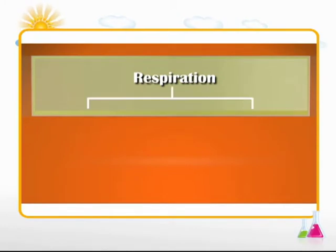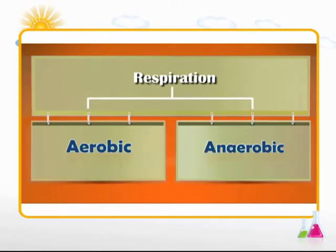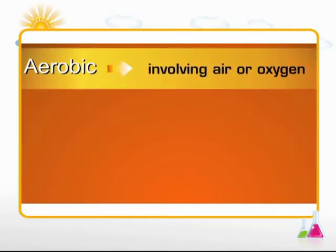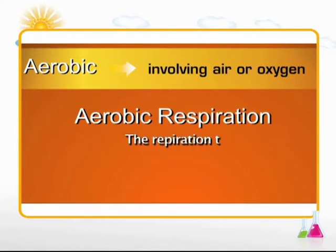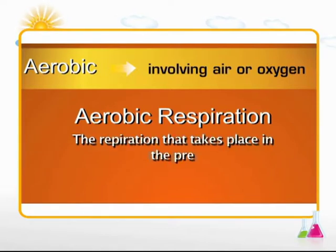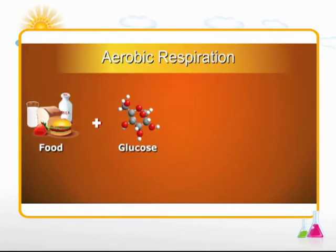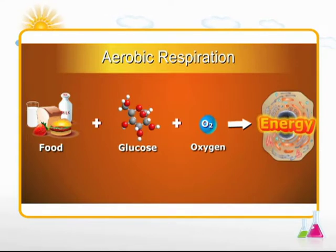There are two basic types of cellular respiration, aerobic and anaerobic. Let's first take up aerobic respiration. The word aerobic stands for involving air or oxygen. You can now easily guess what aerobic respiration means. It is the respiration that takes place in the presence of oxygen. In aerobic respiration, food and glucose combines with oxygen to release energy needed by a cell.